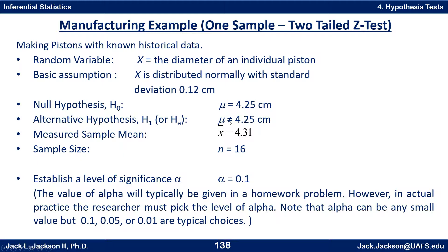There are different kinds of alternative hypotheses. A 'not equal to' alternative leads to what we call a two-tailed test. If the alternative is 'less than,' it's left-tailed; if 'greater than,' it's right-tailed — we'll see examples of those later. We went out and took a sample, finding the sample mean of 4.31 with a sample size of 16.